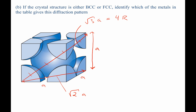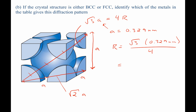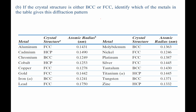With A equal to 0.329 nm, we solve for R: R equals square root of 3 times 0.329 nm, divided by 4, giving R equals 0.1428 nm. Comparing this to the BCC metals in the table: iron is too small, chromium is too small, molybdenum is too small, tantalum is a pretty good match, and tungsten is too small. We can say with confidence that the metal is tantalum.